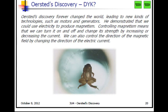Orsted's discovery forever changed the world, leading to new kinds of technologies such as motors and generators. He demonstrated that we could use electricity to produce magnetism. Controlling magnetism means that we can turn it on and off and change its strength by increasing or decreasing the current. We can also control the direction of the magnetic field by changing the direction of the electric current. All these things were things that we were able to do because of Orsted's discovery.